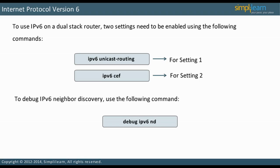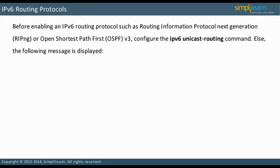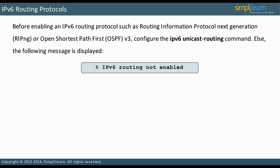Let us review the IPv6 routing protocols. The IPv6 unicast routing command must be entered before enabling an IPv6 routing protocol such as RIPNG or OSPFv3. Otherwise, the message "IPv6 routing not enabled" will appear.